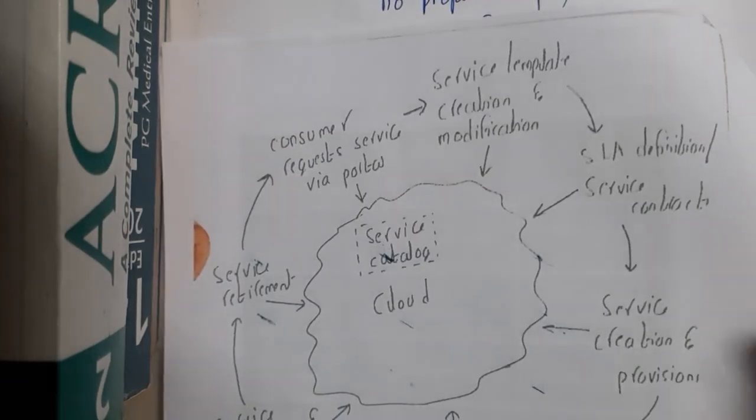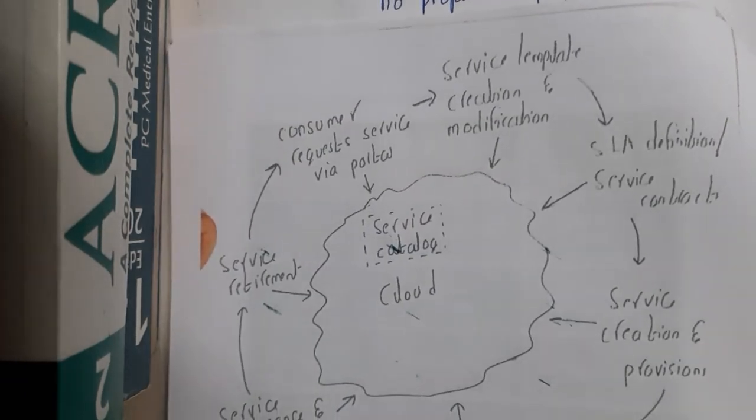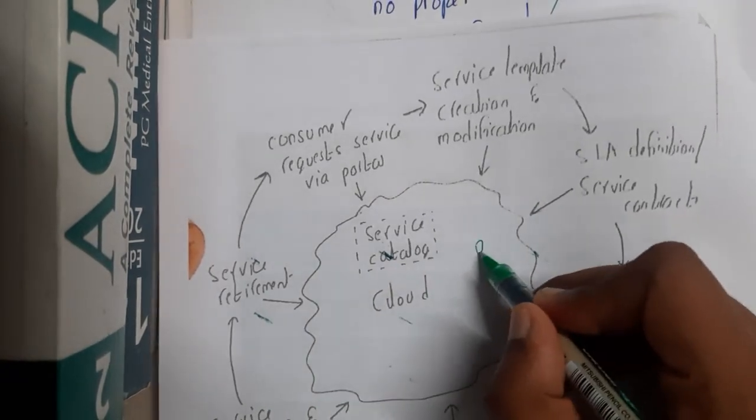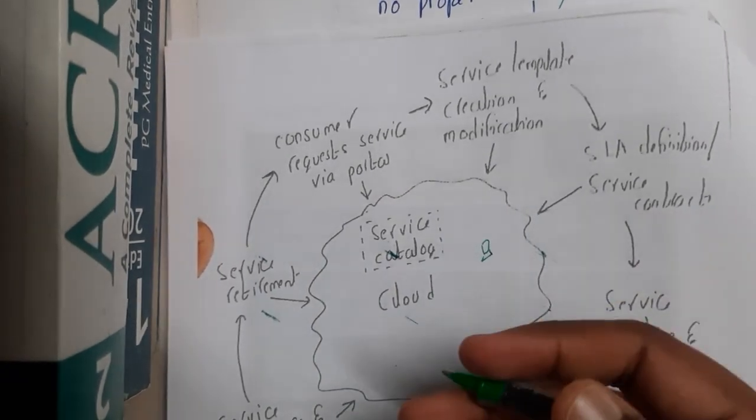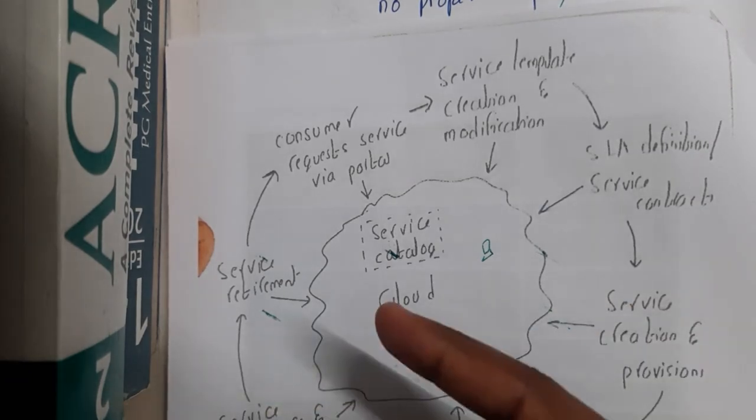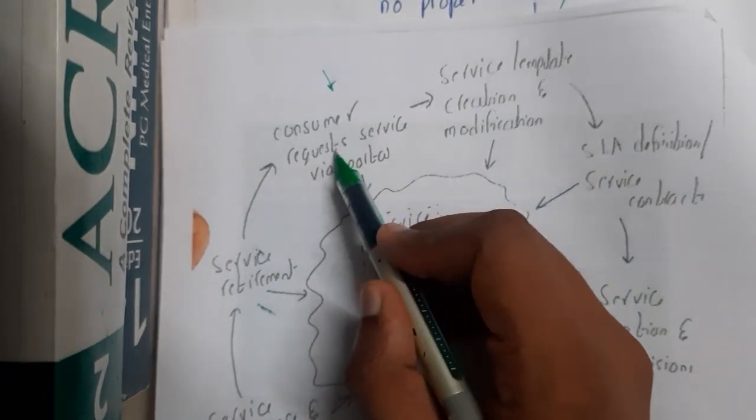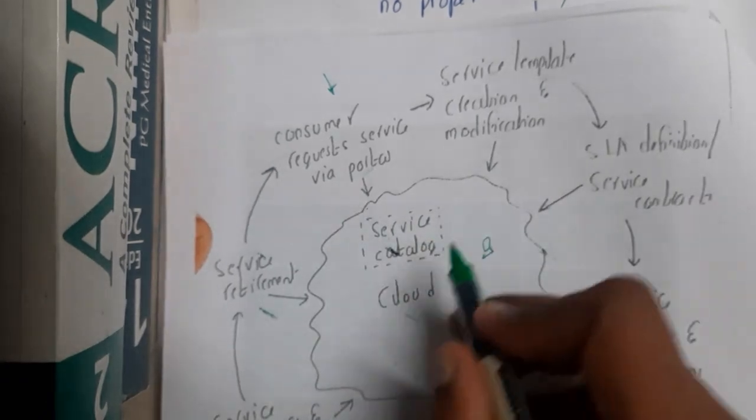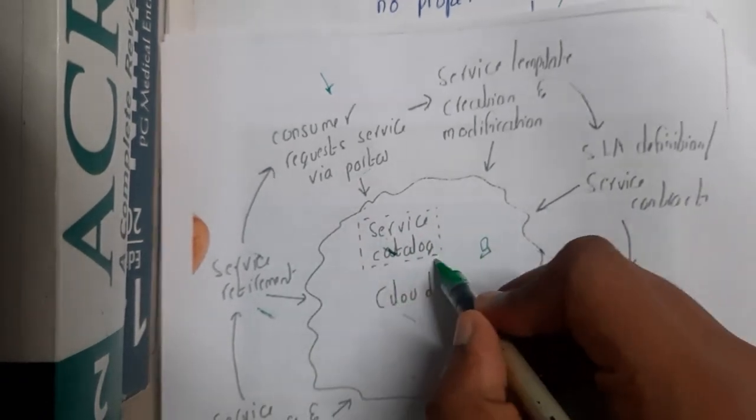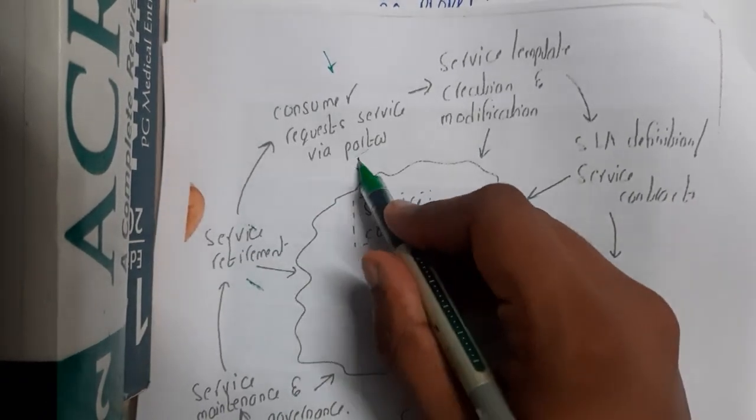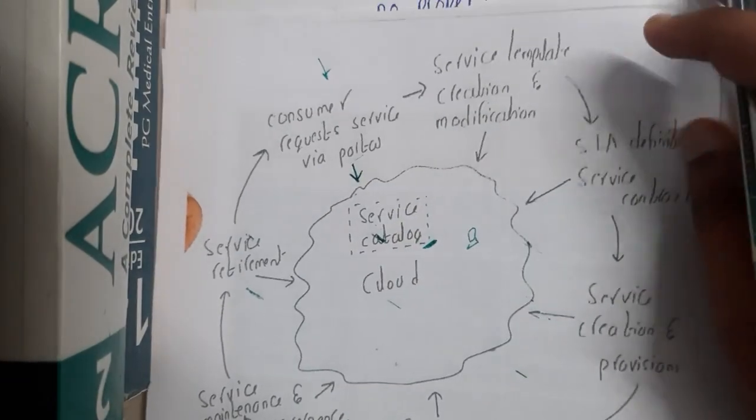What is the first thing that you will do? Whenever you think of an idea and you want to implement it, you will be searching for some cloud service providers and checking their portals. The first stage starts here - the customer requests services via portal. With the portal, you will check the service catalog and send your request to them.